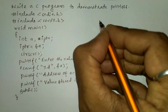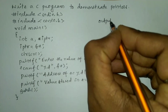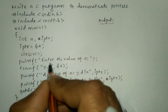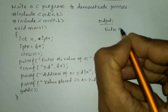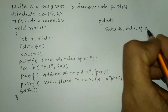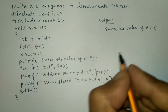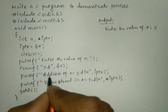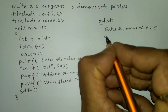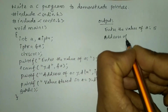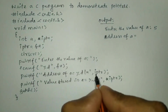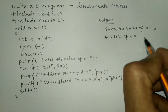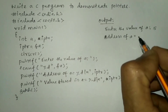Let us see an example. I am going to write the output. Once we compile and run this program it will ask the user to enter the value of a. For example, I am going to enter 5. So a will receive the value 5. Next it is going to print the address of a — whatever address this particular value is stored at, that address will be printed.